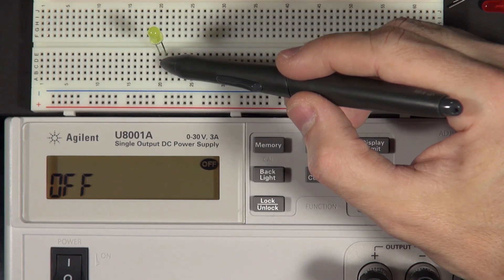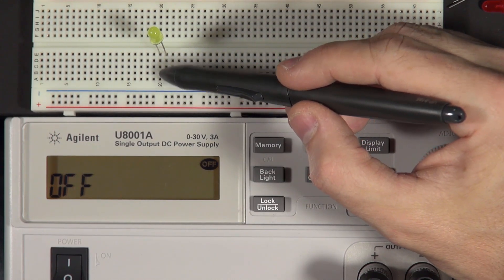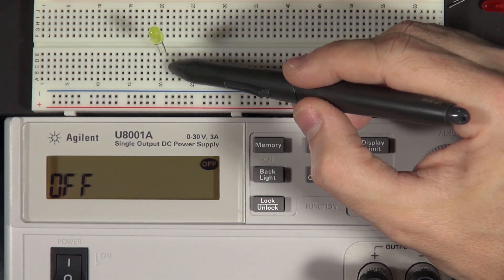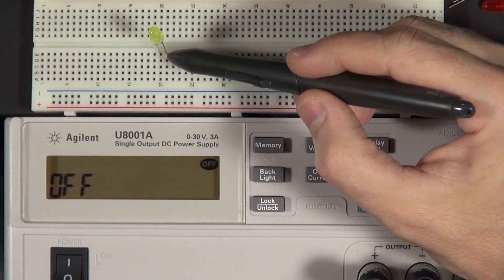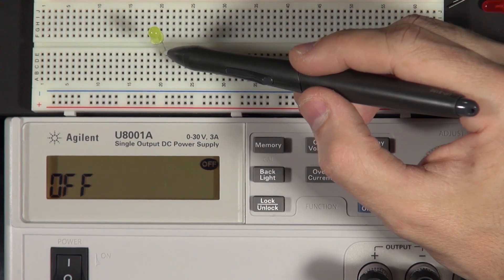But if we were to hook up something to any of these four holes, it would be connected to the left side of the LED. If we connected anything to any of these four terminals here, it would be connected inside the breadboard to the right side of the LED.